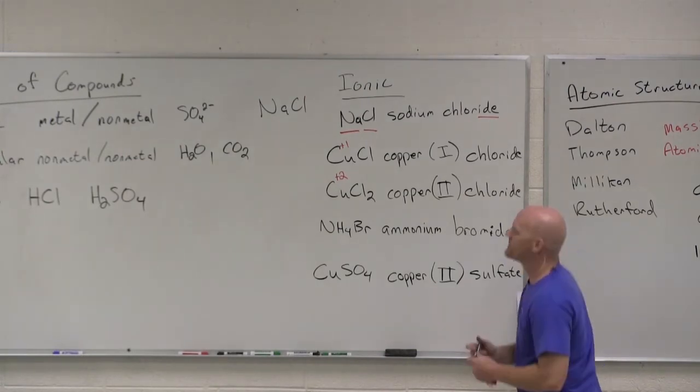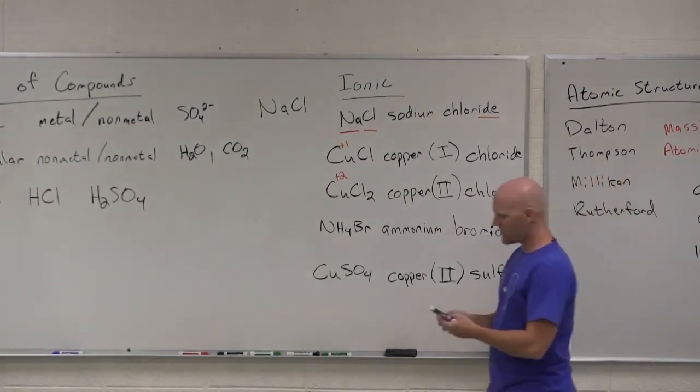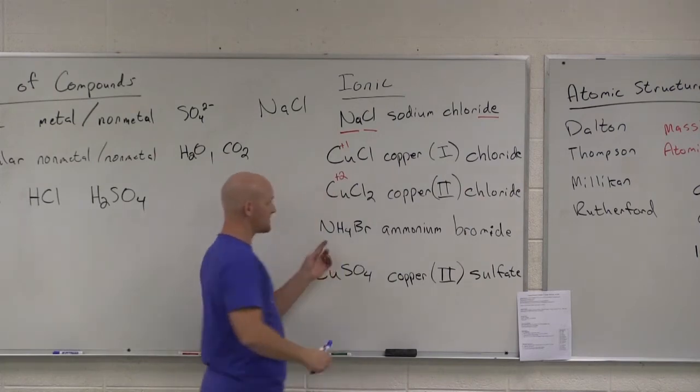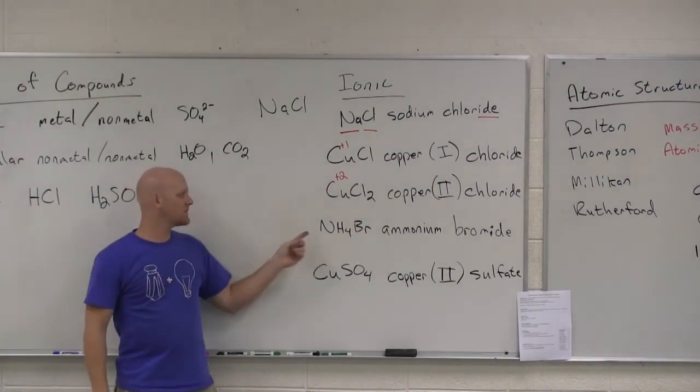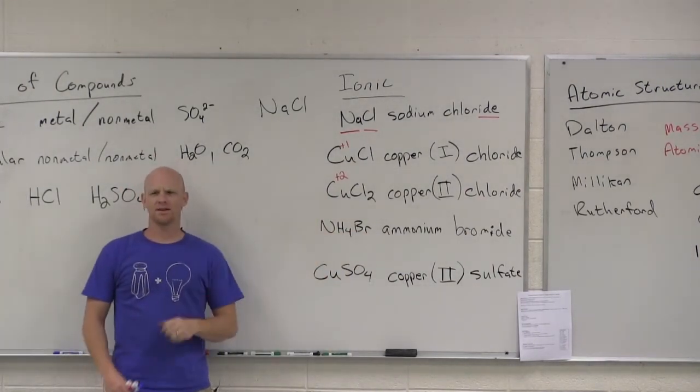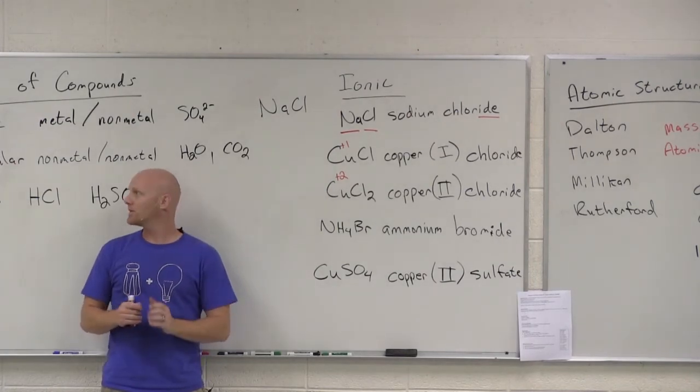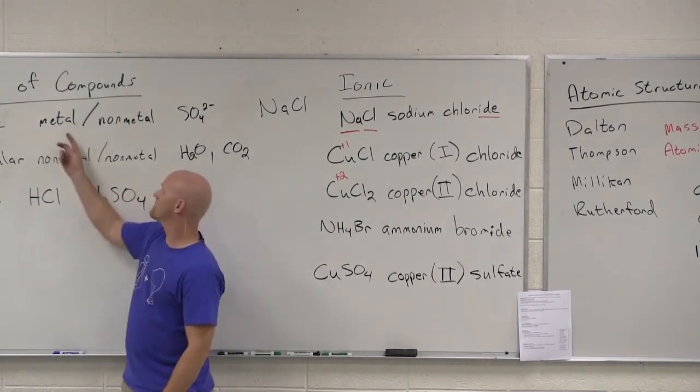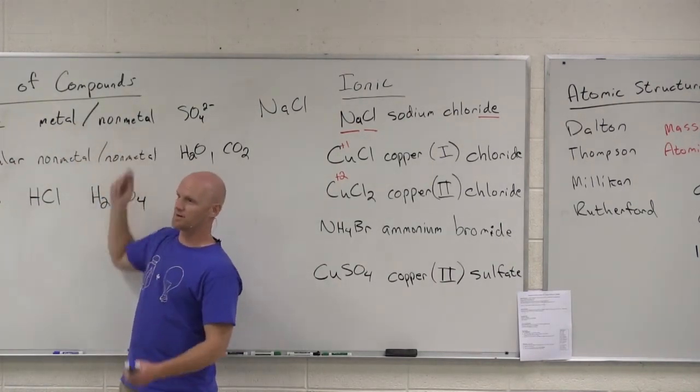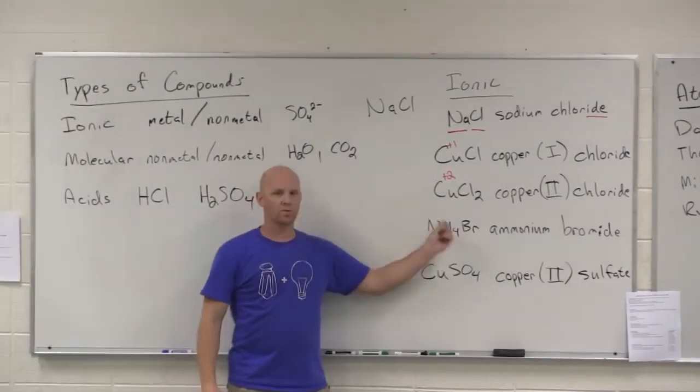One other thing to note. If I want to give you an ionic compound that you're going to not recognize, I would give you something like ammonium bromide. So he's an ionic compound. Why am I saying he's difficult to recognize an ionic compound? Well, he's not a metal and a nonmetal. So in this case, it's all nonmetals. Why is he still ionic?